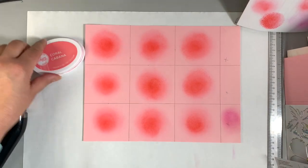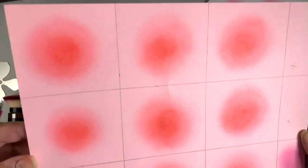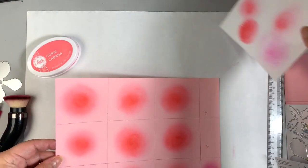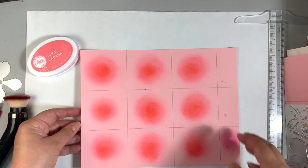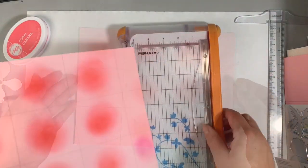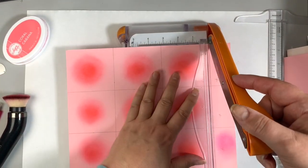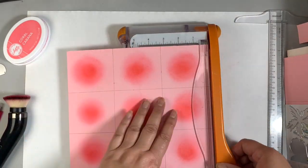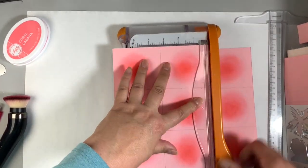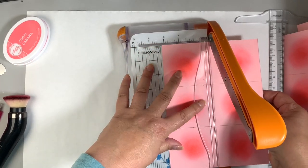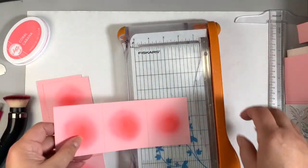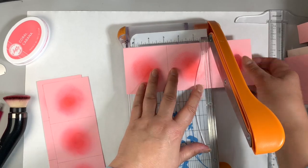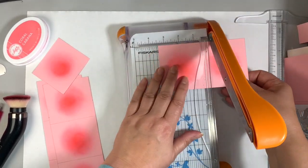On screen the ink still looks a little splotchy, but when this ink dries it will blend more evenly and give a really beautiful result. Here is a close-up of the ink blending, and while it sort of looks like a hot mess right now, it will be really beautiful when I die cut the flower petals.